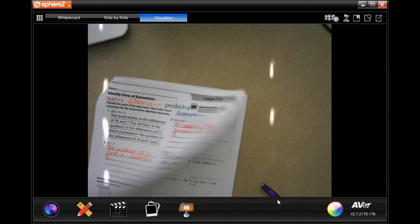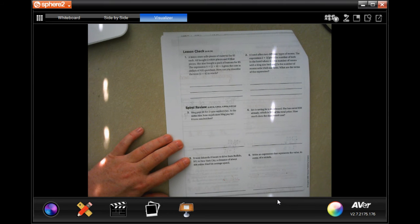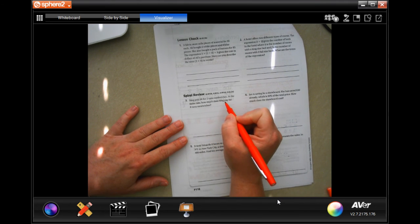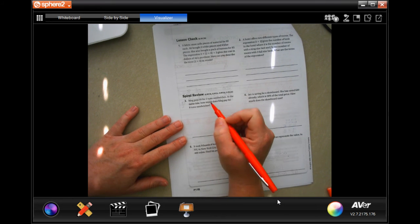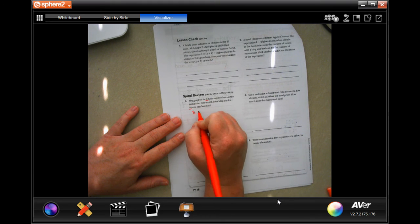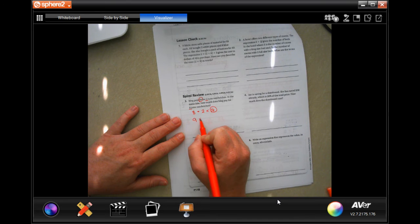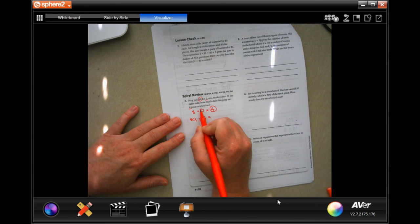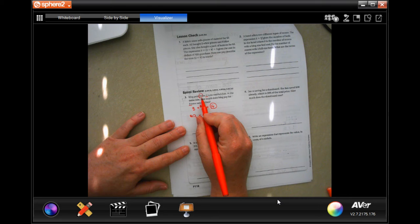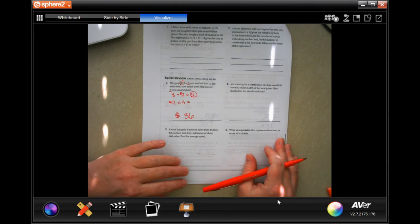We're going to go into the back where you guys are going to do the lesson check. And we are going to go down to our review. Meg paid $9 for two tuna sandwiches. At the same rate, how much does Meg pay for eight tuna sandwiches? Well, to get from two to eight, I need to multiply by four. So now I'm going to take the $9 and I'm going to multiply that by four. Nine times four, $36.